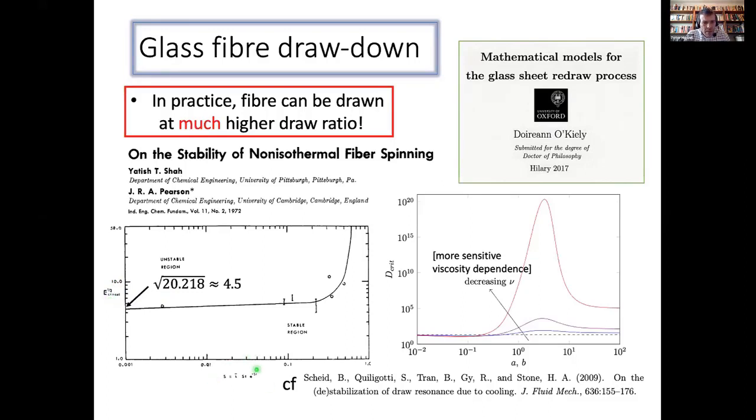But what they also knew was that in practice, they seem to be able to draw at much higher draw ratios than the theory would suggest they ought to be able to. And again, this was explained by Antony back in 1972. And really the culprit seems to be that temperature effects ought to be included. And here, what this is showing, this vertical axis is the square root of the draw ratio. And the horizontal axis is basically a normalized heat transfer coefficient. And so what you see is as you increase the importance of thermal effects, the critical draw ratio increases dramatically.